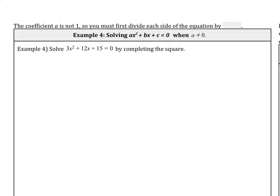Now let's take a look at when the coefficient is not 1. So when it's not 1, you have to first divide each side of the equation, so every term, by a, whatever that coefficient is.